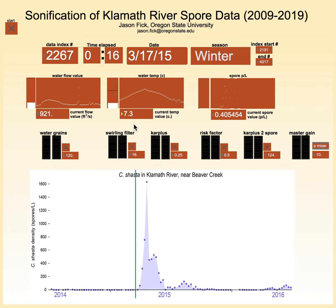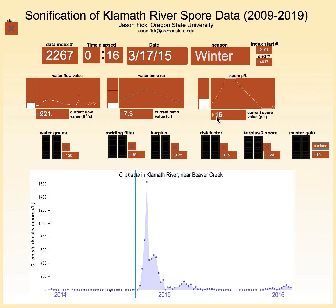Lastly, I've mapped spore data to two separate sounds. One is a pulsating synthetic sound that increases in volume and speed as the spore level increases. A separate sound connected to spore levels above 60 maps the articulation of a string model, which, at high rates, creates several chaotic attacking sounds.